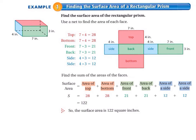Today we'll be starting on page 362 in your math textbook. Example 1, Finding the Surface Area of a Rectangular Prism. Find the area of the rectangular prism. Use a net to find the area of each face.